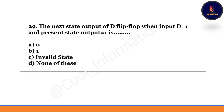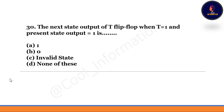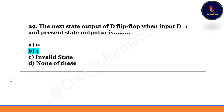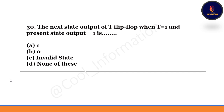Next question: The next state output of a D flip-flop when input D=1 and present state output is 1 — option B is correct: the answer is 1. Next question: The next state output of a T flip-flop — do not confuse this with the D flip-flop question. When T=1 and present state output is 1, option B is correct — the answer is 0.